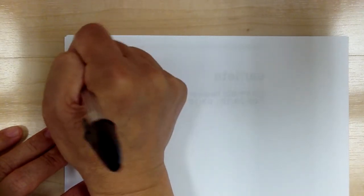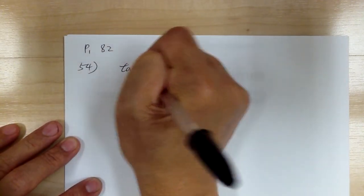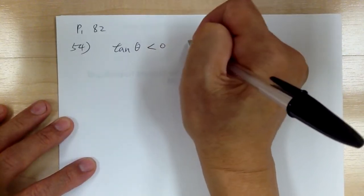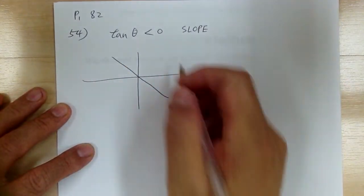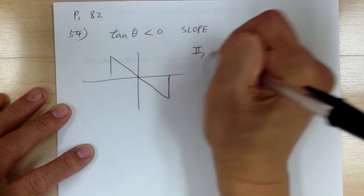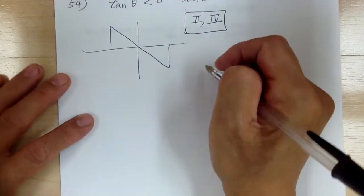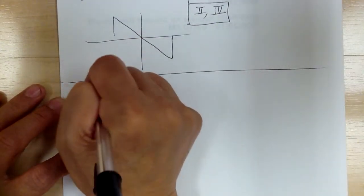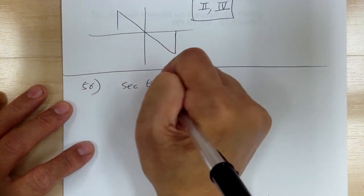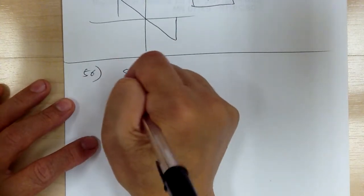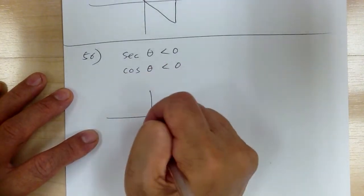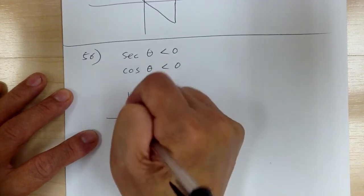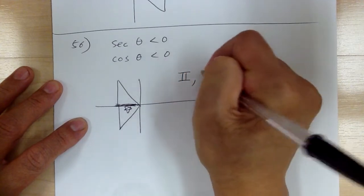Number 54: tangent theta is less than 0. Tangent and cotangent have to do with slope. Slope is negative, so it's going to go this way — going down. That gives us quadrant 2 and quadrant 4. Number 56: secant theta is less than 0. Secant comes from cosine, so you can think of it as cosine. Cosine is negative, so you get a triangle here and here — quadrant 2 and quadrant 3.